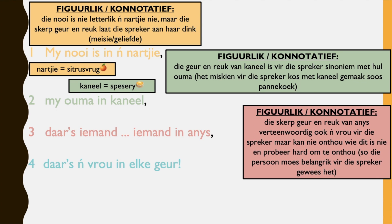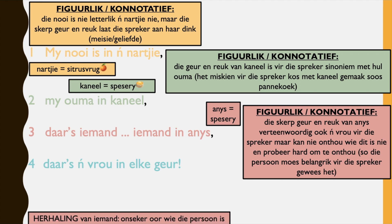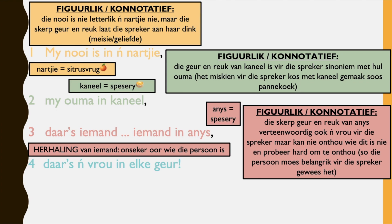Toz iemand, iemand en aneis — there's someone, someone in aniseed. And once again that is vergierlik. Aniseed is also a spice. Die skerp geur en reuk van anys, wat teenwoordig ook 'n vrou vir die spreker, maar kan nie onthou wie dit is nie, en probeer haar hart om te onthou. Die persoon moes belangrik vir die spreker gewees het. So ironically, yes, he can't remember their name, but he's trying to. Whenever he smells or tastes aniseed, he thinks of this person who at this point is nameless — they still play an important role in his life. Maybe this is a memory of someone when he was very young. But either way, because he's trying to remember them, the person is important. Herhaling van 'iemand' wat onsekerheid vir wie die persoon is — there's a repetition of 'iemand', which means he's just unsure who the person is. There's an ellipsie — the person is thinking and wondering about this person.